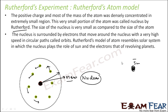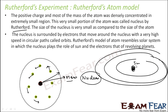Rutherford compared the atom to the solar system. Just as we have the sun at the center with planets like Mercury, Venus, and Earth moving in orbits around it, in the atom the nucleus is like the sun and the electrons are like planets moving in circular orbits.